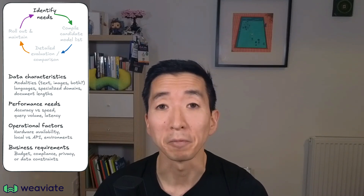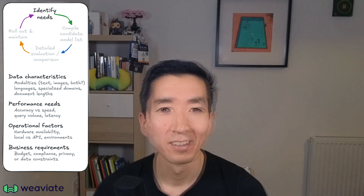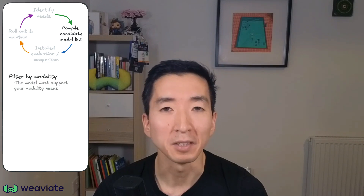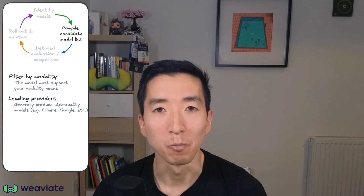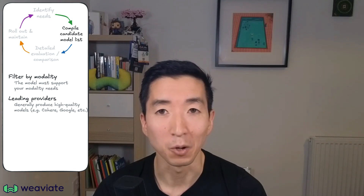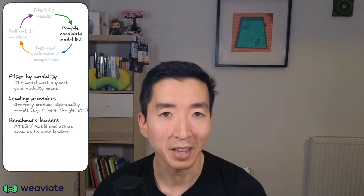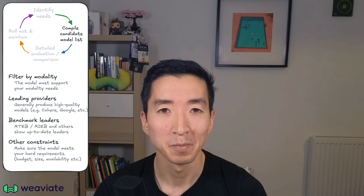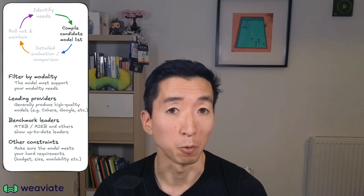By documenting these requirements upfront, you'll be able to make informed and structured trade-offs as you move forward. With so many options available, you need to narrow down to a manageable shortlist. Focus on models specifically designed for your modality — text, images, or multimodal data — leading models from well-known providers like OpenAI, Cohere, or Google, benchmark leaders on the MTEB or other relevant evaluations for your use case, and models that align with your operational constraints like size and compatibility. Aim for a shortlist of three to five promising candidates that meet your fundamental requirements.